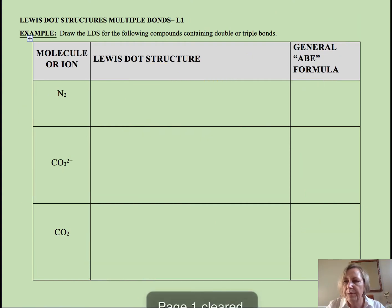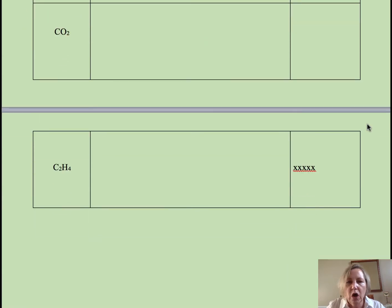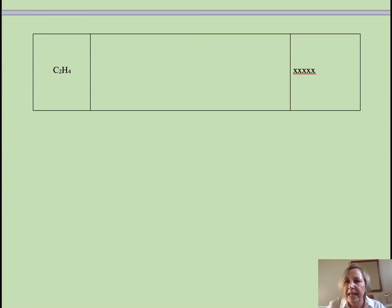Okay. One more that I think will be really helpful. And that gets us into carbon compounds. That's an area of chemistry called organic chemistry. And we have two carbons. And what we want to do, the hydrogens have to be on the periphery.